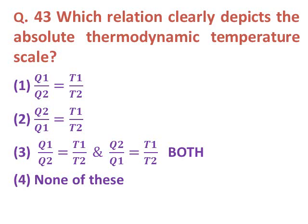Question forty-three: Which relation clearly depicts the absolute thermodynamic temperature scale? Option one: Q1/Q2 equals T1/T2. Option two: Q2/Q1 equals T1/T2. Option three: both of these. Option four: none of these. The correct answer is option one — Q1/Q2 equals T1/T2.